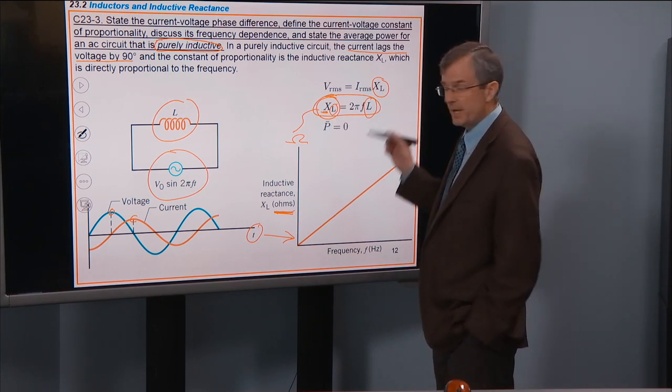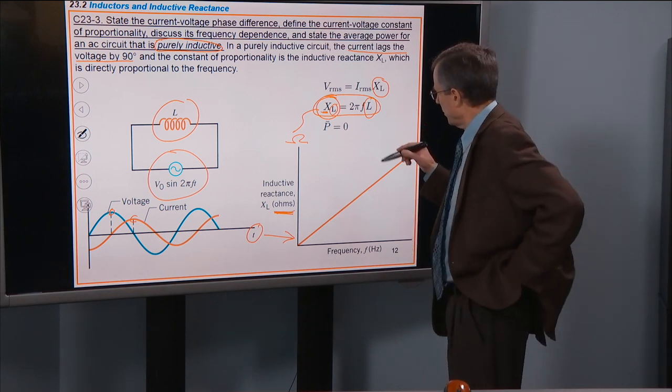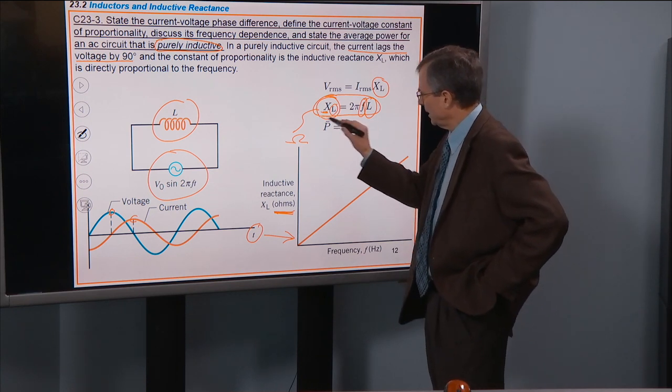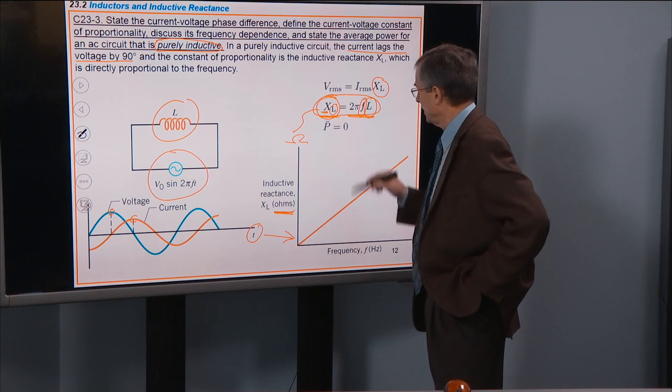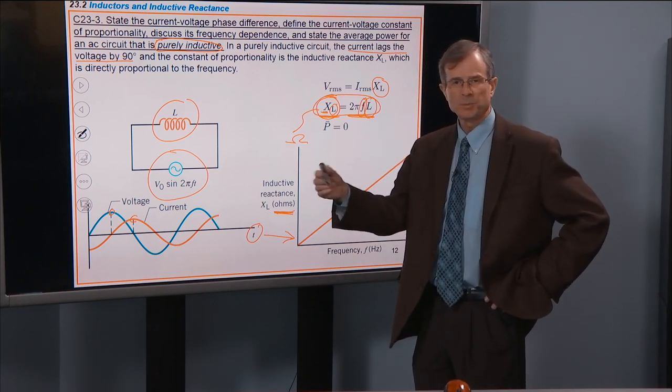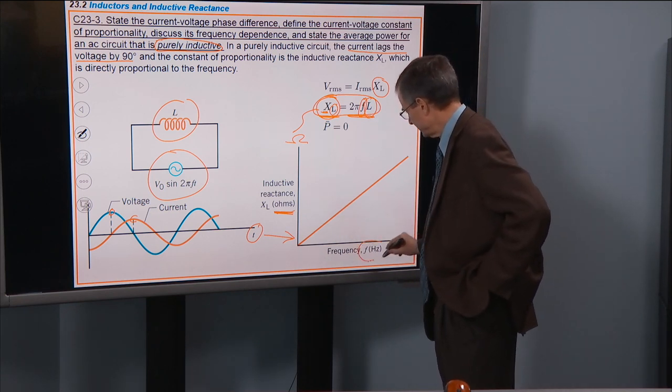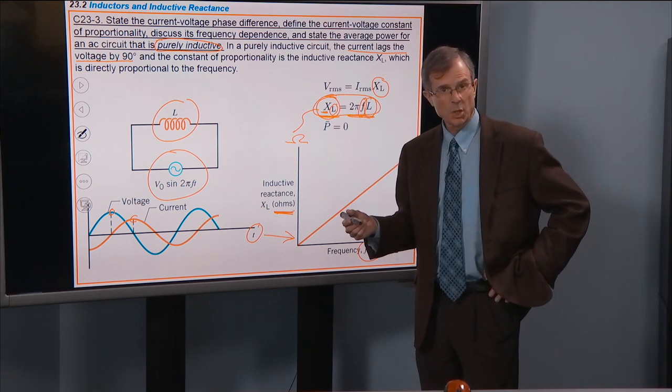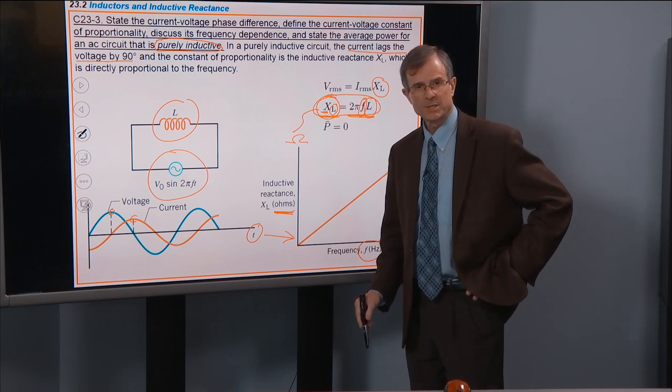How does this inductive reactance depend on frequency? And you say, well, wow, there's a frequency right there. The inductive reactance is proportional to the frequency. So it's linear, it's a line. This looks like y equals mx plus b, where x is the frequency, and all this, the 2πL represents the slope. And so it's just a straight line.